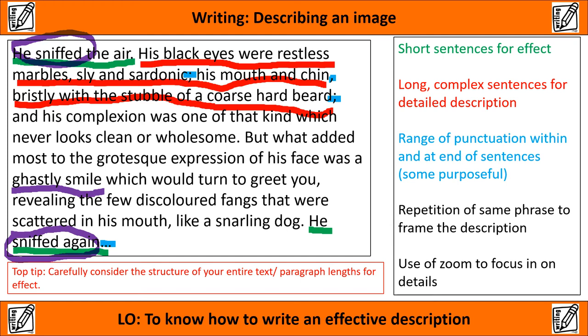Top tip here again for you. We've just been looking at one paragraph, thinking about sentences and punctuation. But you do need to carefully consider the structure of your entire text. For example, are you going to vary your paragraph lengths for effect? Are you going to use clever structural tools to help frame your description — like starting and ending with the same image? Remember that we need to look at structure as a whole for the complete text and description that you're going to write.